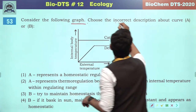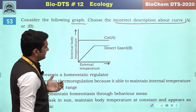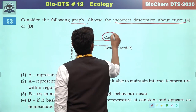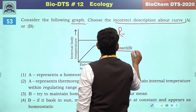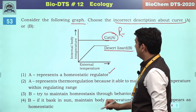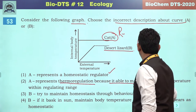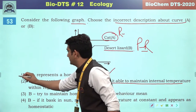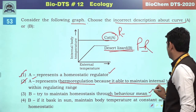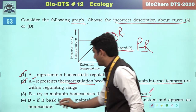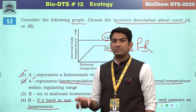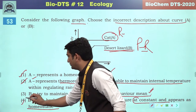Consider the following graph — choose the incorrect description about curve A or B. Curve A represents a homeostatic regulator (e.g., a cat). Curve B represents a partial regulator (e.g., desert lizard). A represents thermoregulation as it maintains internal temperature within a constant range — correct. B tries to maintain homeostasis through behavioral means — the desert lizard basks in the sun to maintain body temperature. So the correct answer will be the fourth option.